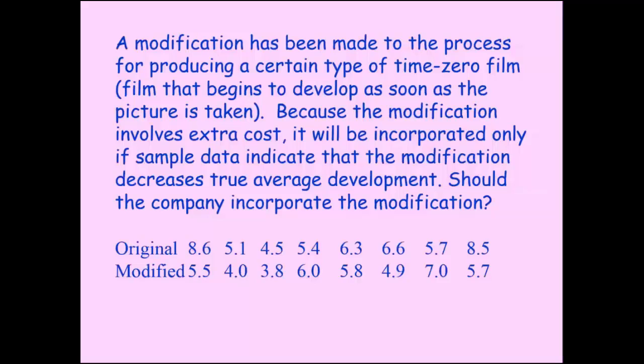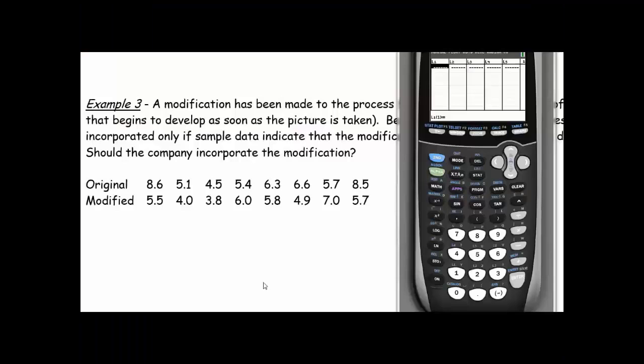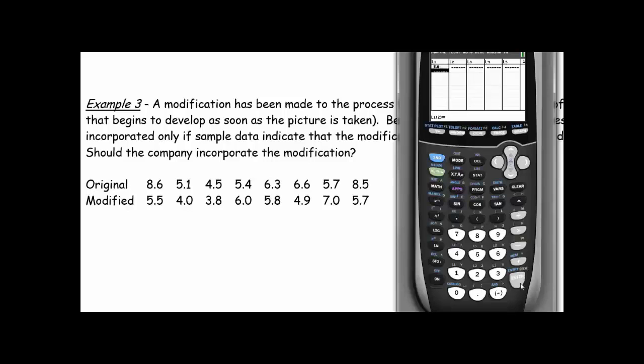So what we're going to do is we're going to take out our calculators and we're going to type in the original numbers into list one and the modified numbers into list two. Okay, so we're going to just take a second and type in all those numbers. So 8.6, 5.1, all of that goes into list one. So if you want to pause the video and go ahead and type the numbers in and then start it up once you've got the original in list one and the modified in list two.